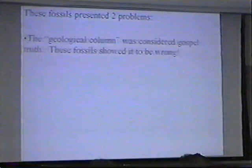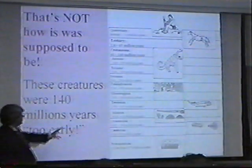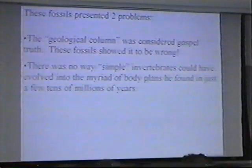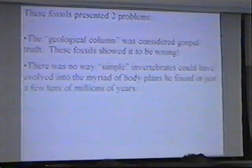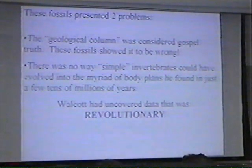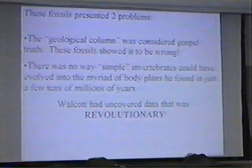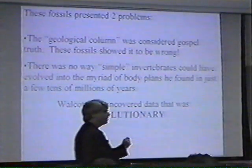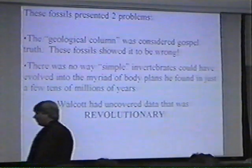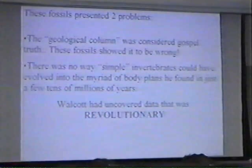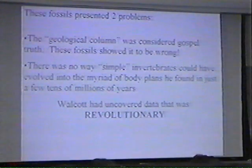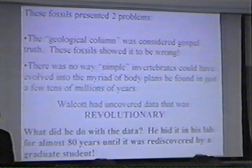So what's an evolutionist to do? The geological column was considered gospel truth, but these fossils showed the bottom was wrong. There was simply no way that simple life forms could evolve into more complex life forms in only a few tens of millions of years. Walcott had discovered revolutionary data that contradicted a paradigm. As a scientist, what do you do with that? You publish — because this is what makes your name. Revolutionary findings that contradict paradigms get published. What did Walcott do? He hid the fossils.